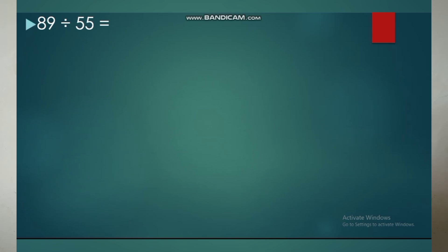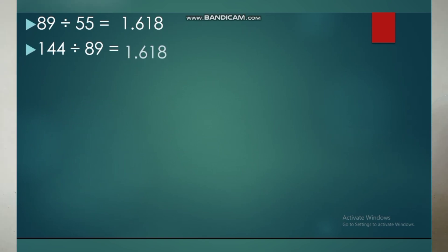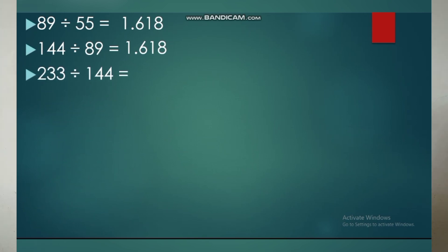89 divided by 55 is equal to 1.618. 144 divided by 89 is equal to 1.618. 233 divided by 144 is equal to 1.618. 377 divided by 233 is equal to 1.618.